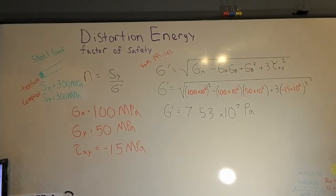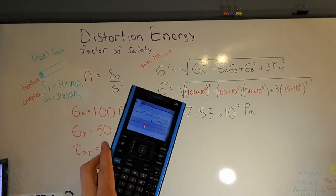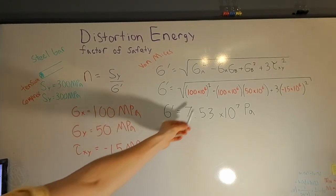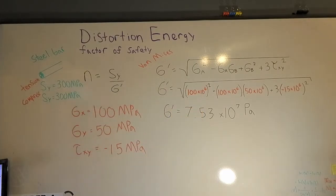Now substituting that into the calculator, we get 7.53 x 10 to the 7 pascals. And keep in mind that we are in base unit pascal since we put all these x 10 to the 6.